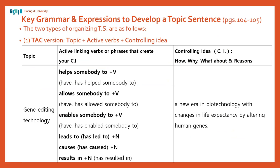Let's wrap this up. Pages 104, 105, and 106 — your book is basically giving you some grammar and vocabulary to help you write topic sentences. You do not have to use these phrases or this grammar, but it's just giving you some ideas for words and phrases you can use.